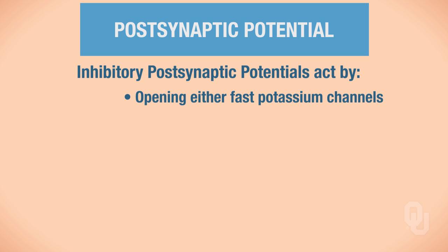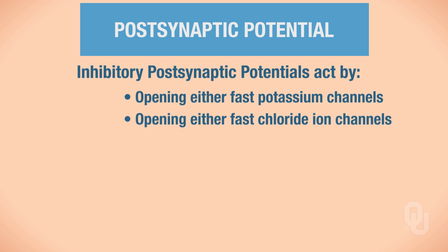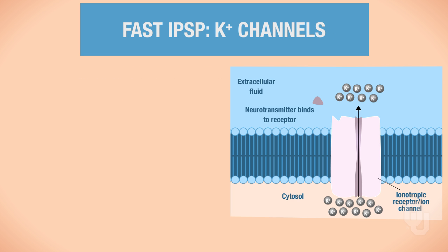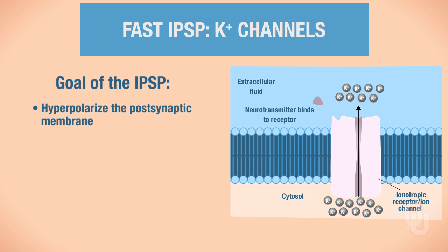Fast inhibitory postsynaptic potentials can be generated by opening either fast potassium channels or fast chloride ion channels. When dealing with potassium channels, the goal is to hyperpolarize the postsynaptic membrane. If you hyperpolarize the postsynaptic membrane, it becomes more negative than rest — more negative than negative 70 millivolts. Let's look at how this happens.